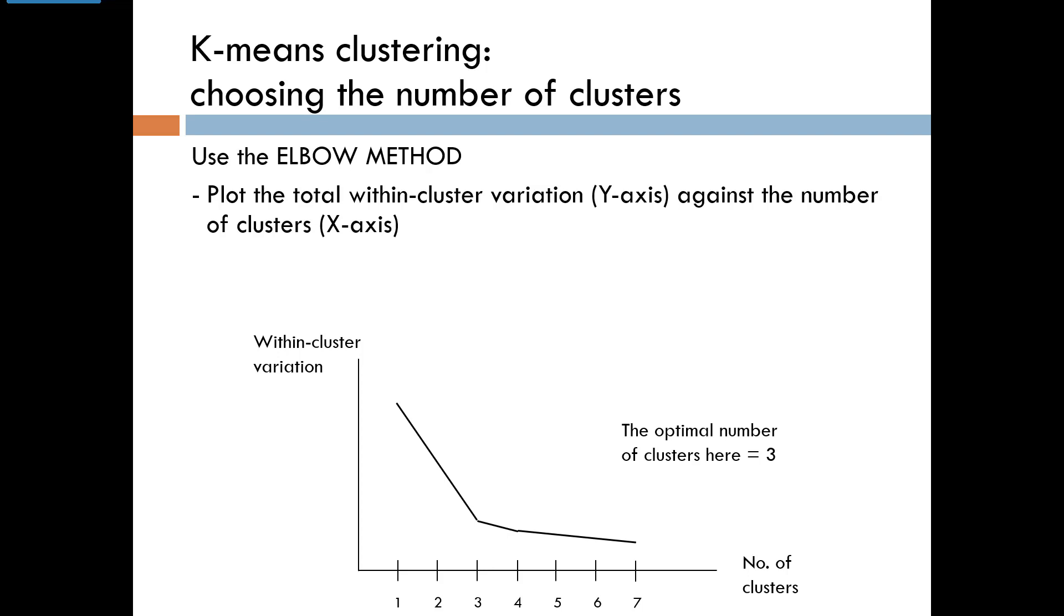Here's a rule of thumb we use to decide how many clusters we should have. It's called the elbow method. The name is not elegant, but it's an accurate description. We plot a graph with the total within-cluster variation on the y-axis and the number of clusters on the x-axis. As we can see, the variation decreases steeply until you get to three clusters, after which it still decreases, but less sharply. This is known as the elbow of the plot, and the elbow shows the optimal number of clusters based on the within-cluster variation.